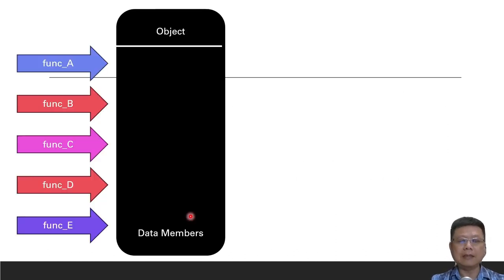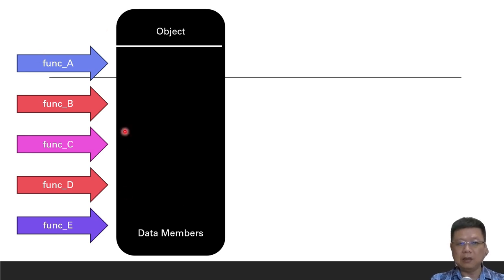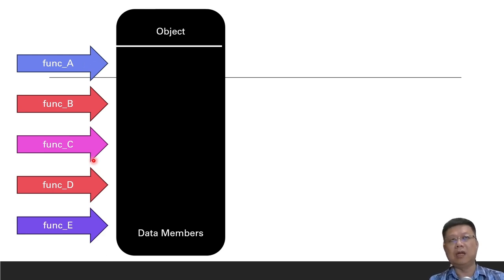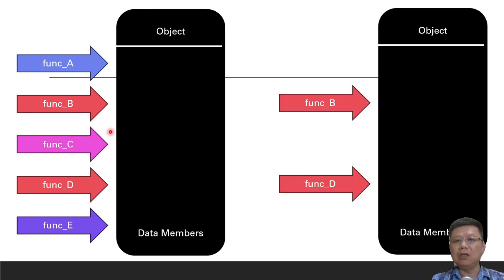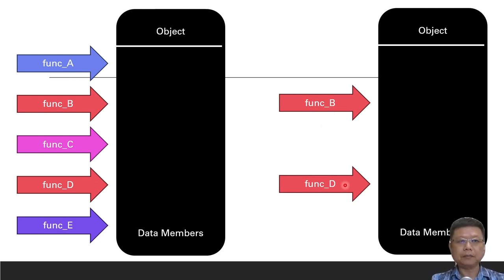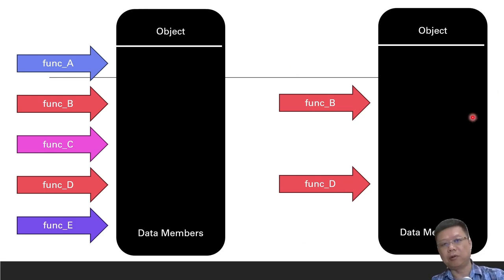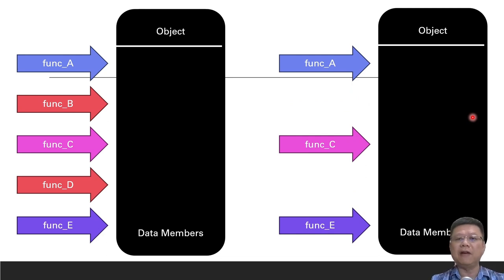Let's say our original program has one object with data members and functions. Each function may have its own characteristics. So when we call it in program A, we may only use functions B and D, but it's still based on the same classes. And when we write the next program, we might only need functions A, C, and E — but they are all grouped in the same classes.